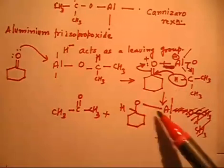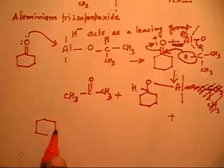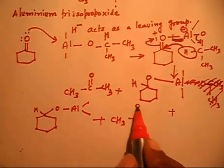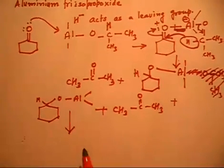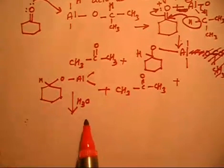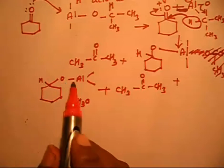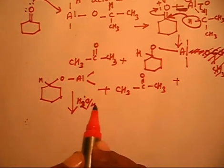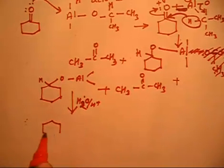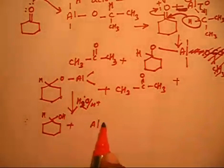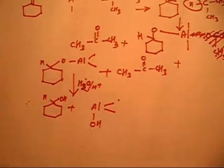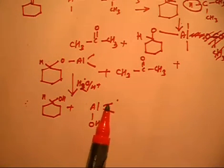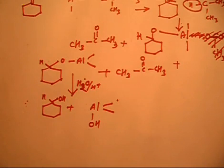Finally, we have a product containing H, O, Al, and two bonds remaining, plus acetone (CH3COCH3) as a byproduct. If I do hydrolysis with H3O+, water attacks, the aluminum–oxygen bond breaks, and I get Al–OH plus the alcohol product. Repeating this process three times gives Al(OH)3 as the final aluminum-containing product.